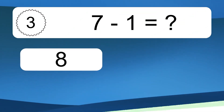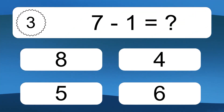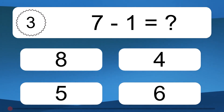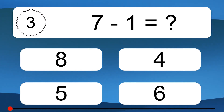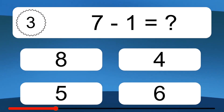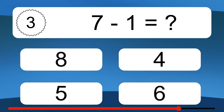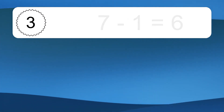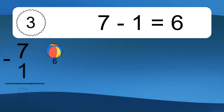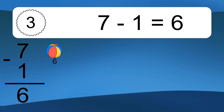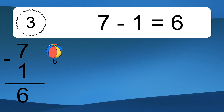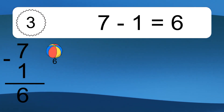7 minus 1 equals what? 7 minus 1 equals 6. Let's count it: 6.